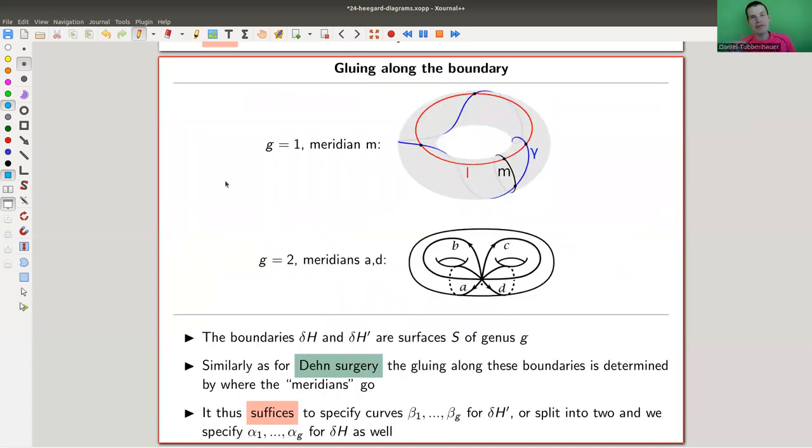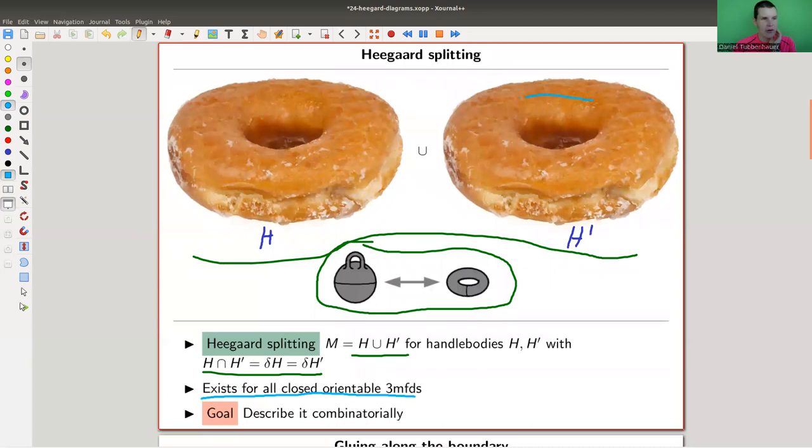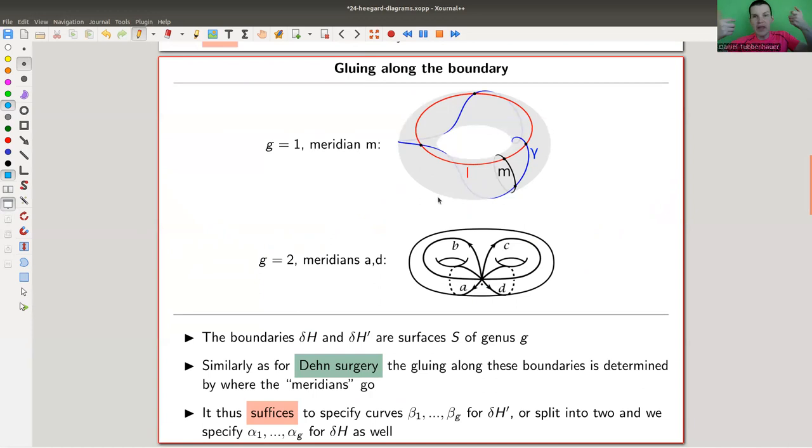So the idea is essentially the same as for the Dehn surgery. So you glue those two things here, the H and H prime, together along the common boundary, which is kind of the surface here. So this would be the boundary of H prime, and here's a surface. I really should say that this is the surface, this is the boundary of H, which is in general some kind of genus G surface, which we have already seen before. And all the gluing of two genus G surfaces to one another are determined where the meridians go. Remember for G equals one, we had this picture that the meridian goes to gamma, and gamma is some combination of the meridian and the longitude. So here it goes once around the longitude and apparently three times around the meridian.